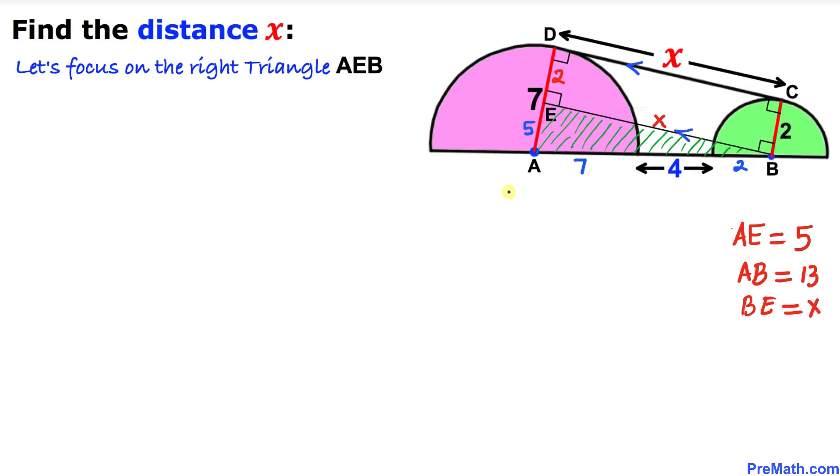And here is our final step. Let's focus on this right triangle, this shaded right triangle AEB. And here I have copied it down separately. And we know that our AE is 5 units, so this side has got to be 5. AB is 13, so that means this side is 13. And our BE side is x units.